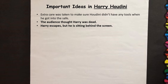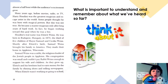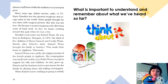Many years ago, before movies, radio, or TV, Harry Houdini was the greatest magician and escape artist in the world. Some people thought he was born with magical powers, but this was not true — he became a master magician only after long years of hard work. He began working toward his goal as a boy. Houdini's real name was Enric Weiss. He was born in Budapest, Hungary in 1874, the third of five children. Shortly after Enric's birth, his family moved to America and made their home in Appleton, Wisconsin. Samuel Weiss was a rabbi, but his congregation was small and couldn't pay him enough to support his family. As they grew up, Enric and his brothers earned money by shining shoes and selling newspapers.